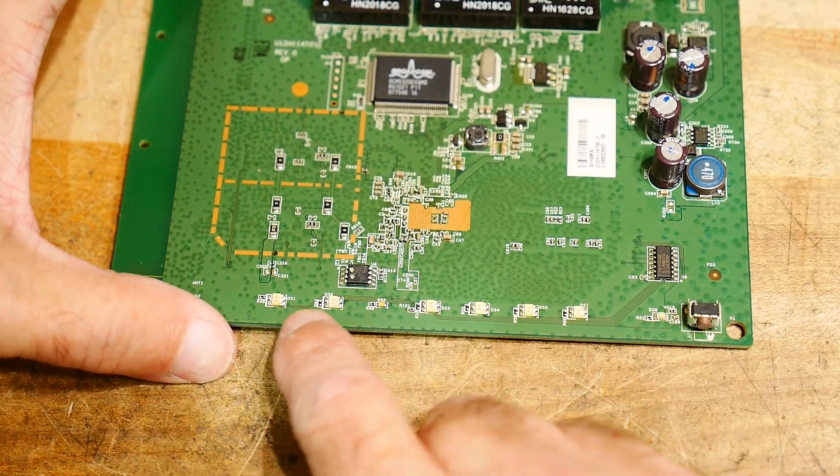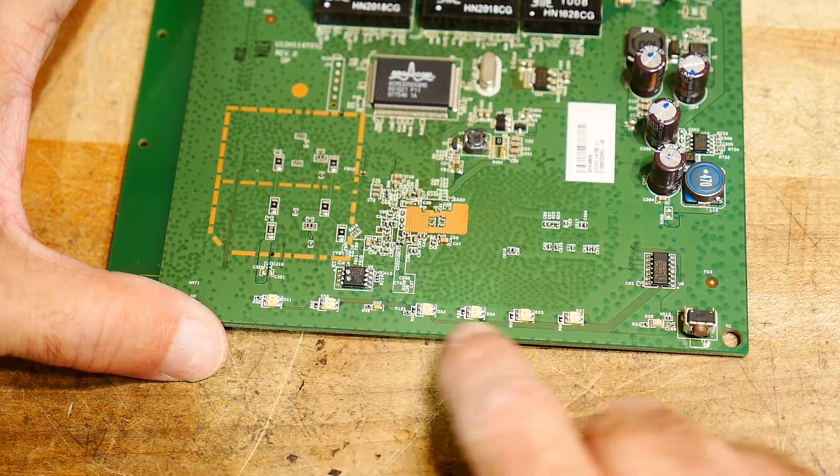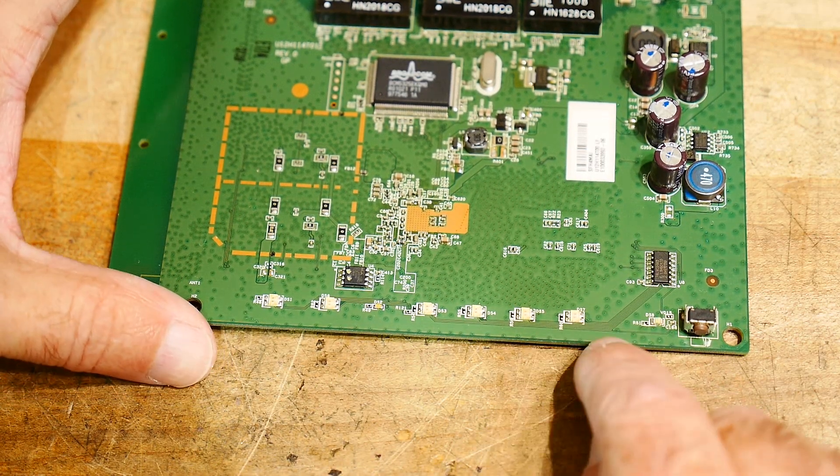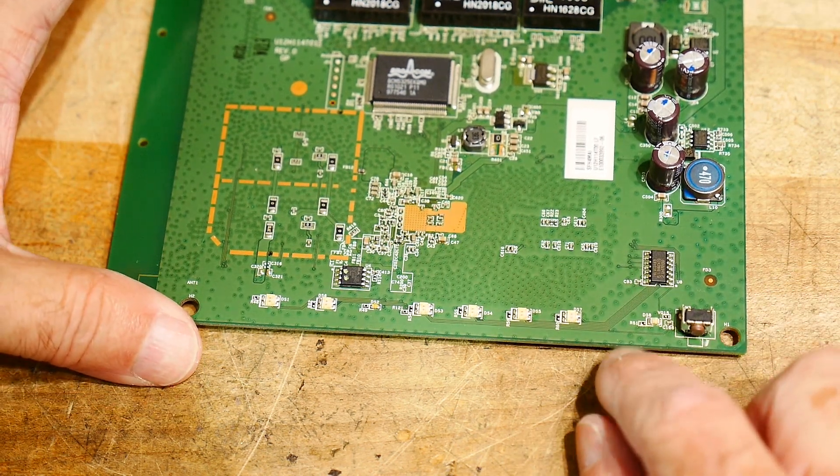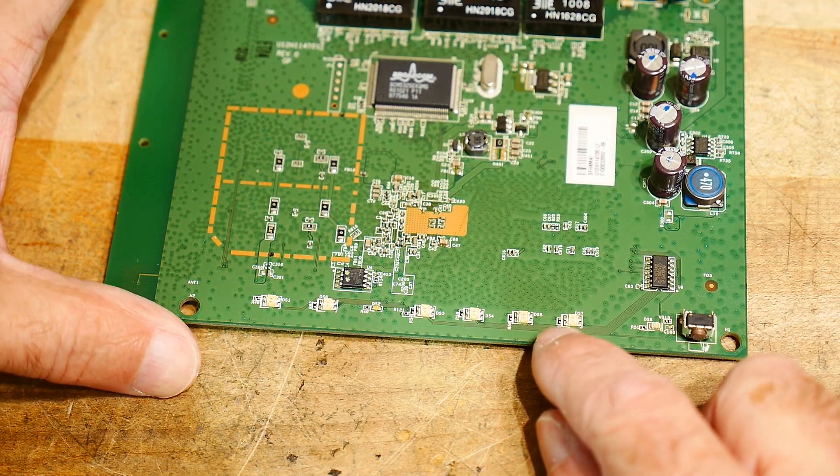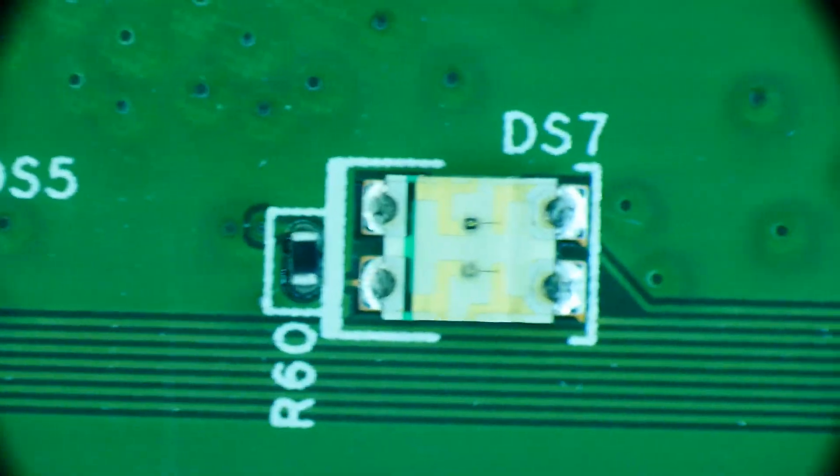They're bi-color LEDs with two LEDs in one package, and they're surface mount. I thought I'd take a look at those under the microscope. I used to work in LED land, so I'm kind of interested in stuff like that. We'll see what's inside there and figure out what different colors they are.